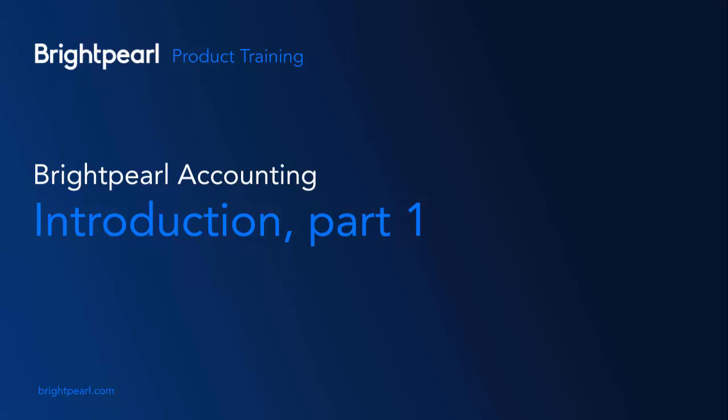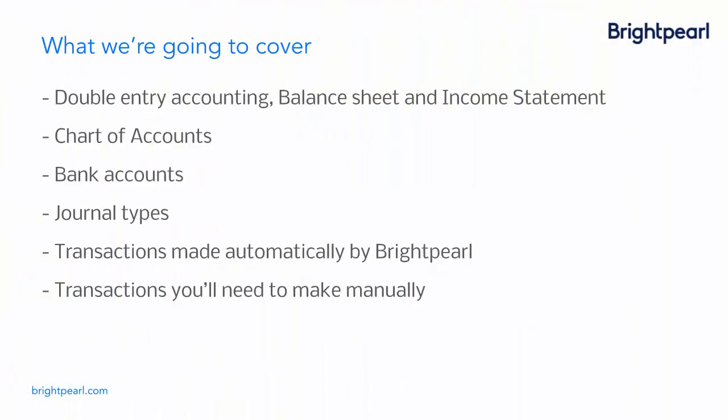This video is going to give you a broad overview of the concepts of Brightpearl accounting. There are a number of videos that go into more detail on each topic, so make sure you watch those too. I'm going to give you an introduction to double entry accounting, the balance sheet, and the income statement, which is called a profit and loss report in the UK. I'm going to look at the chart of accounts, bank accounts, and journal types, and see which transactions are made automatically by Brightpearl and which you'll need to make manually.